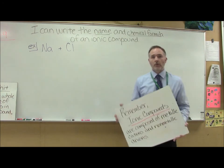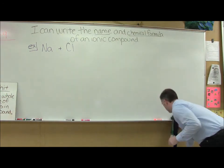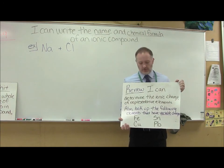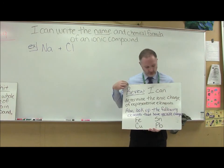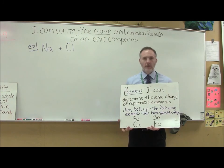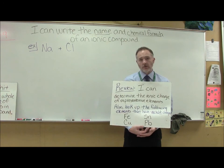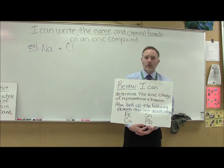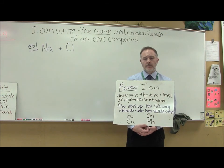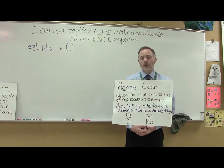Now another thing I want you to refresh your memory before we get started here is knowing how to figure out the ionic charge of our elements. So just a little refresher, I can determine the ionic charge of representative elements. So remember, you've got to be able to look at your periodic table, figure out how many valence electrons it has, and then is it going to lose valence electrons or gain valence electrons to complete its octet. That's a skill you have to have, and I'll give you a hint. We're going to warm up with that tomorrow.